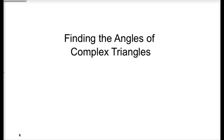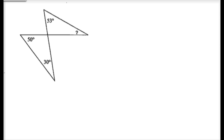In this lesson we're going to be finding the angles of complex triangles. In our first example, we have two triangles joined together, and we're looking for this missing angle here, marked with a question mark. My goal is to get from one triangle to the next triangle.